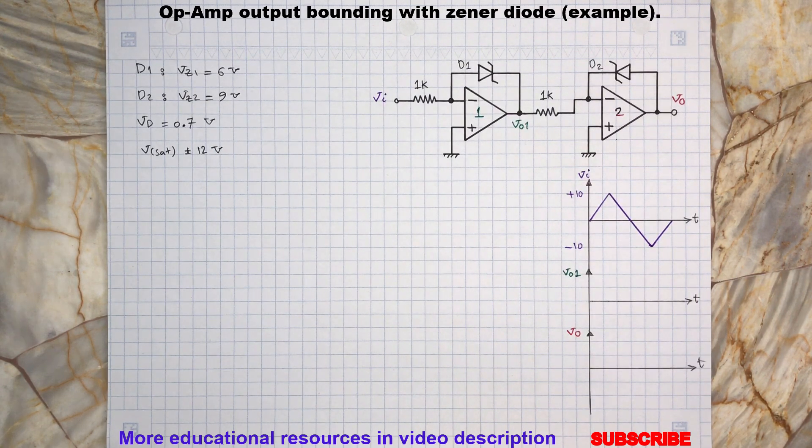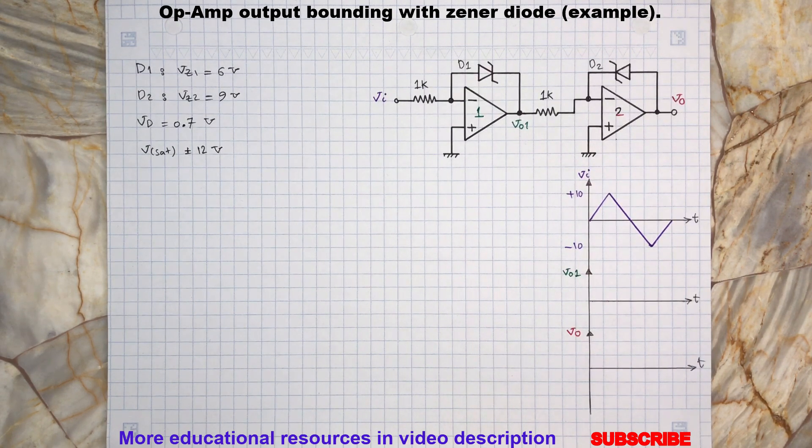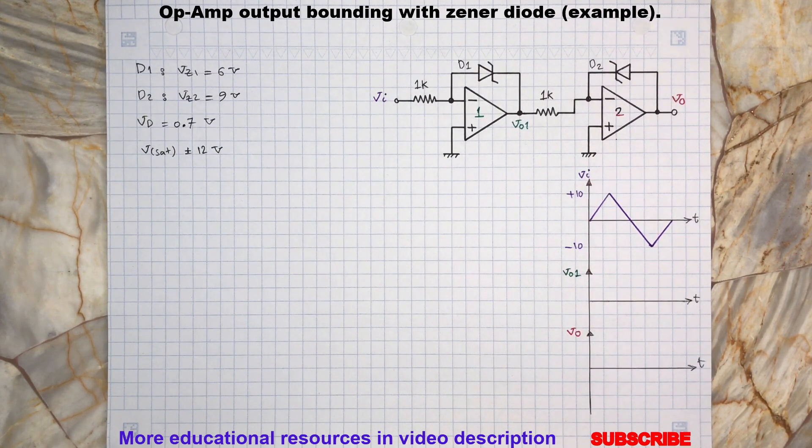So this will cause D1 to conduct and limit the output voltage V01 to minus 0.7 volts. Remember, since the anode has zero volts and it is forward conducting, then its cathode must have 0.7 volts less than the anode.